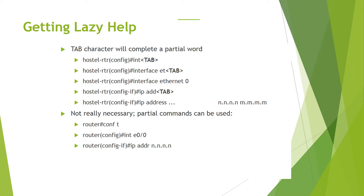Hostel-rtr(config-if)# ip address <network-address> <subnet-mask>. Tab completion is not really necessary for partial commands but can be used. For example, Router(config)# t Tab completes to 'interface'.